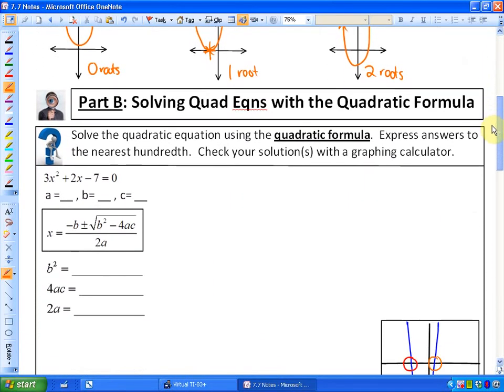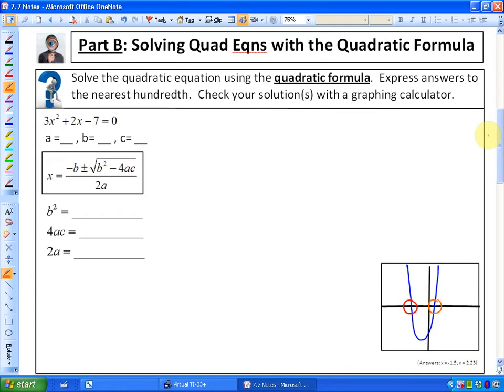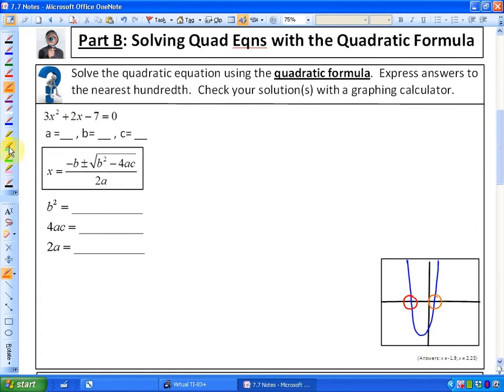In section 7.5 we looked at solving quadratic equations by factoring. In some cases, like this one I'm highlighting in blue, this particular quadratic equation would be very difficult to solve. In fact, it would be impossible to factor, so it would be difficult to solve without the quadratic formula. In cases where you can't factor, use the quadratic formula. This problem says solve using the quadratic formula, express answers to the nearest hundredth, and check with a graphing calculator. We already have the standard form of a quadratic equation.